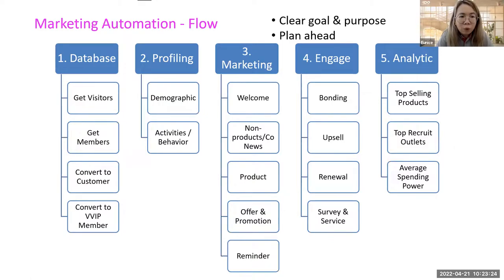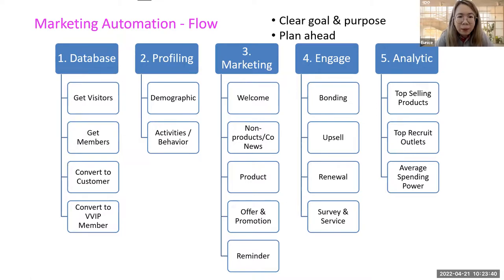We have a marketing automation flow with five components: database, profiling, marketing, engagement, and analysis. Before knowing this flow, you need a clear goal and purpose for why you're doing this marketing strategy. You really need to sit down and plan ahead.